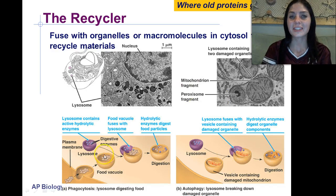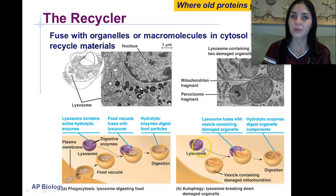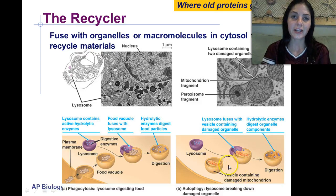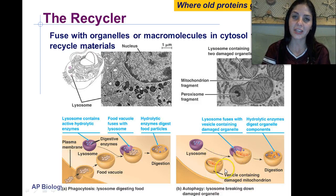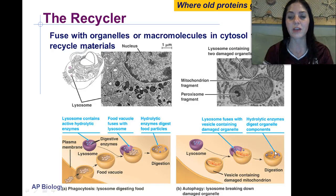This is an example of a lysosome fusing with a food vacuole and digesting it into monomers the cell can use. The other example is when dead or dying cell organelles need to be recycled — in this case, a lysosome fusing with a mitochondria and breaking it back down into proteins that can be recycled in the cell.